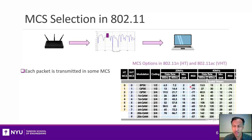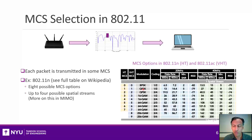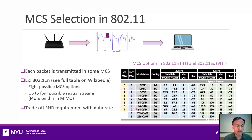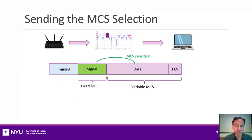This is a table taken from the standard, which shows these different MCS options. One aspect about these options is that they change with the SNR. So depending on your received signal strength or the SNR that you have, you can actually get different options. As you get higher SNR, you can get higher rates. The question then is how to pick the MCS that matches the SNR in that channel.